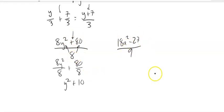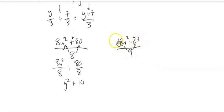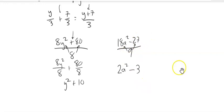Similarly, with subtraction: (18a² − 27) divided by 9. Both terms are being divided by 9. So 18 divided by 9 is 2, giving 2a², minus 27 divided by 9, which is 3.